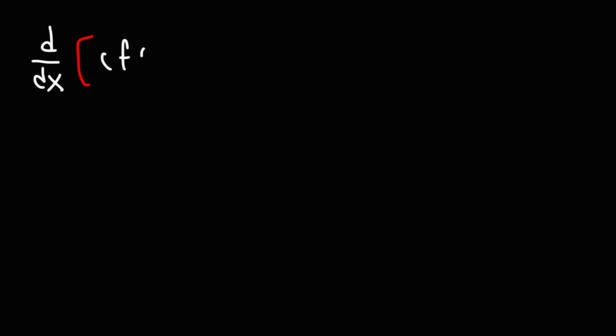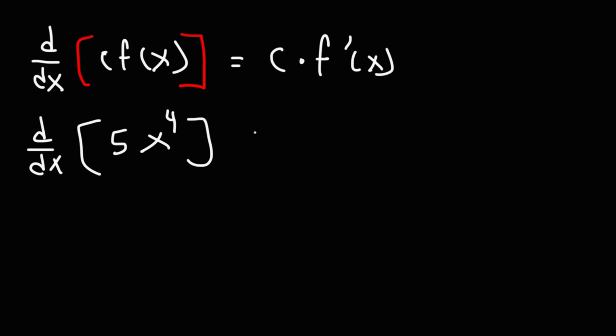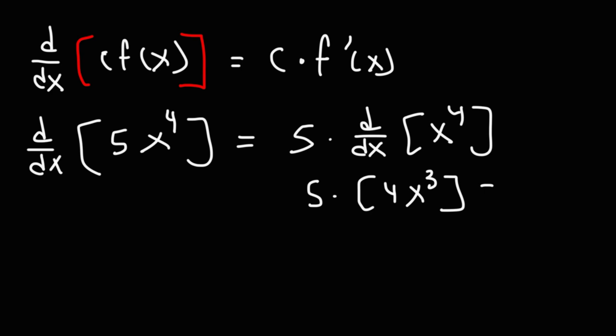Next up, we have something called the constant multiple rule. If you're trying to find the derivative of a function multiplied by some constant c, it's simply going to be that constant times the derivative of that function. For instance, if we want to find the derivative of 5x to the 4th, we can rewrite this as 5 times the derivative of x to the 4th. Using the power rule, we know this is going to be 5 times 4x cubed, which becomes 20x cubed.